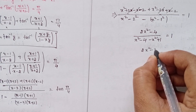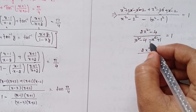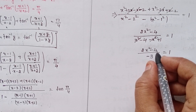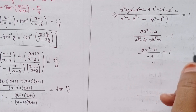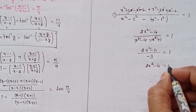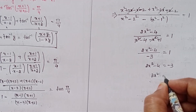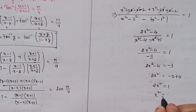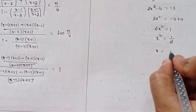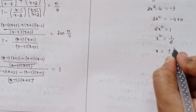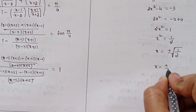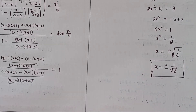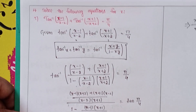Cross multiplying: 2x² − 4 = −3, so 2x² = −3 + 4 = 1, giving x² = 1/2. Therefore x = ±√(1/2) = ±1/√2. This is the solution to the first problem.